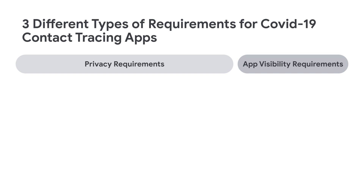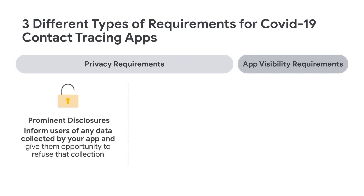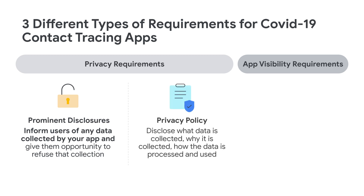Under the privacy requirements, the first requirement is the prominent disclosure, on which you'll need to inform users of any data collected by your app and provide them the opportunity to refuse data collection. Next, under the privacy requirement, is the privacy policy. Please be thorough in how you handle user data by disclosing what data is collected, why it is collected, and how the data is processed and used.